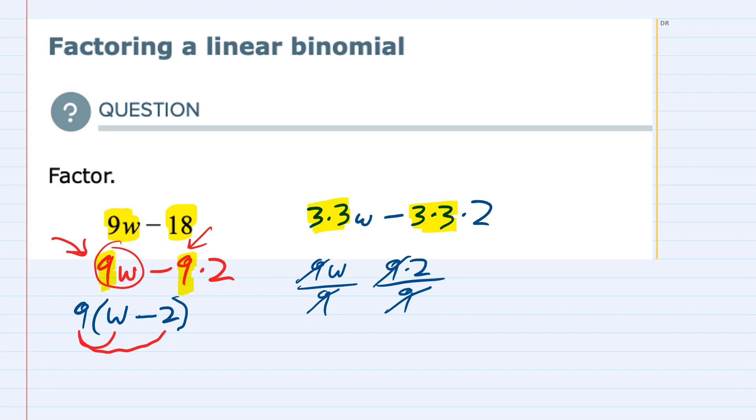So we have factored out the greatest common factor, which is 9. And my new expression is 9 times w minus 2.